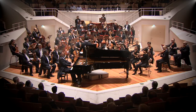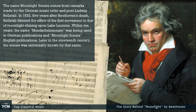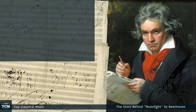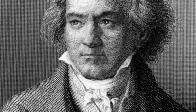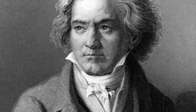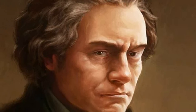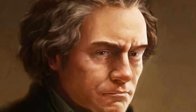The name Moonlight Sonata comes from remarks made by the German music critic and poet Ludwig Relstab. In 1832, five years after Beethoven's death, Relstab likened the effect of the first movement to that of moonlight shining upon Lake Lucerne. Within 10 years, the name Mondscheinsonate was being used in German publications and Moonlight Sonata in English publications. Later in the 19th century, the sonata was universally known by that name.